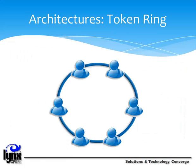Token ring is another form of network configuration which differs from Ethernet in that all messages are transferred in a unidirectional manner along the ring at all times. Data is transmitted in tokens, which are passed along the ring and viewed by each device. When a device sees a message addressed to it, it copies the message and marks it as being read. As the message makes its way along the ring, it eventually gets back to the sender, who notes that the message was received. The sender can then remove the message and free that token for use by others.